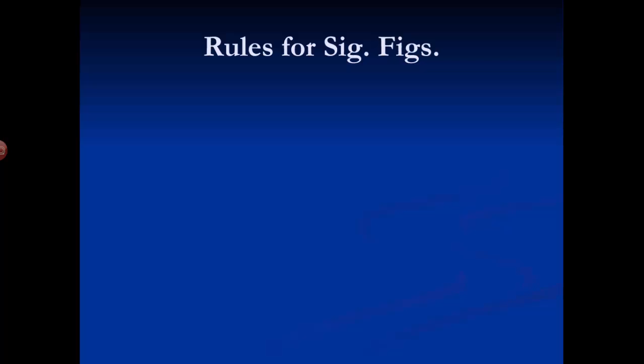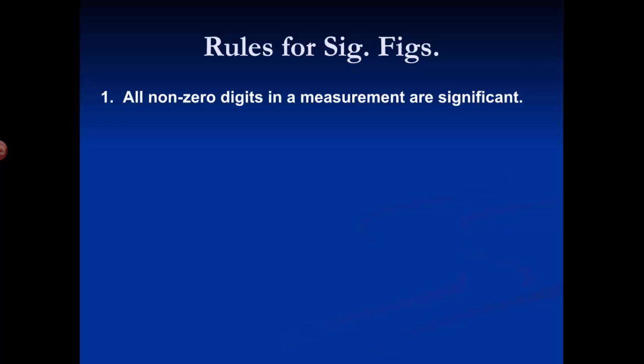There are rules. These are nice in that you don't actually have to understand why the rules are the way they are — you just have to learn them and apply them. There are six rules. We're going to look at the first five, because they deal with almost every measurement we'll be working with. The sixth is for rare cases. The first rule is easy: all non-zero digits in a measurement are significant.